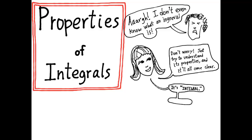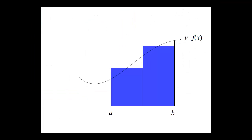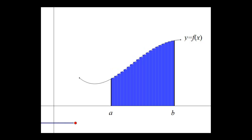Every integral in this video is going to be of the form: integral from a to b of f of x dx. Let's take a moment and review the graphical picture of what an integral means. Here's a picture of a function y equals f of x, and you can see two rectangles positioned under the curve. If I add up the areas of those two rectangles, I get a Riemann sum. And if I take the limit as the number of rectangles gets arbitrarily large, then I have an integral.